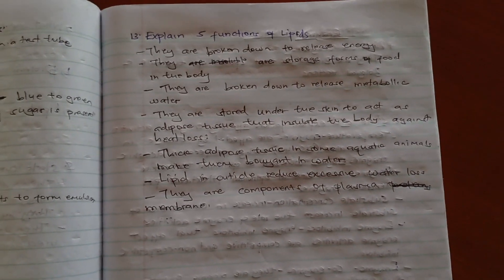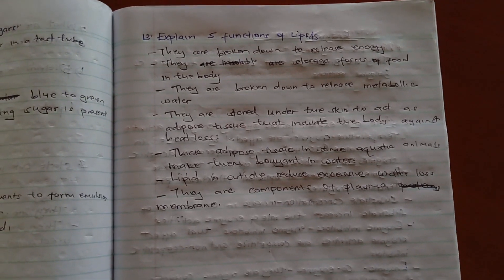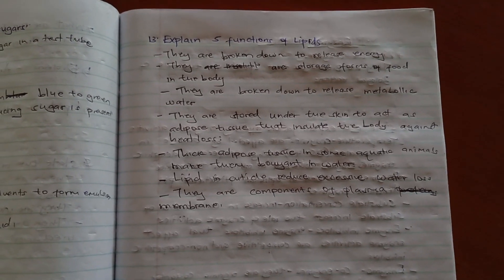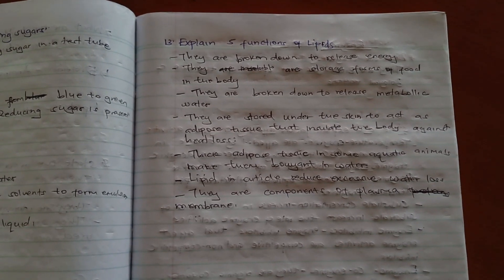Explain five functions of lipids. They are broken down to release energy, that is in absence of carbohydrates. And they are stored under the skin to act as heat insulators in our bodies against heat loss.